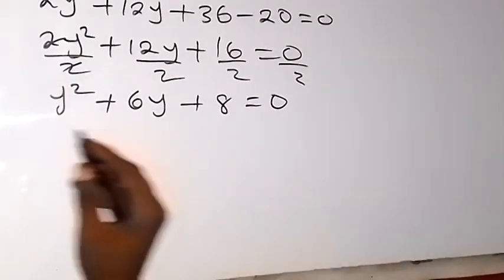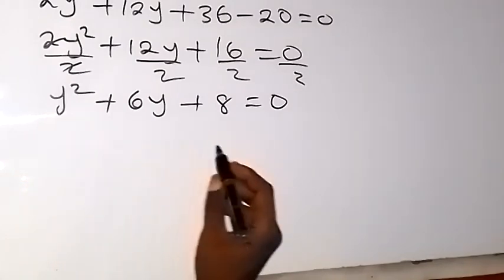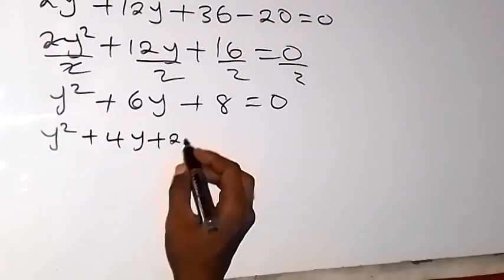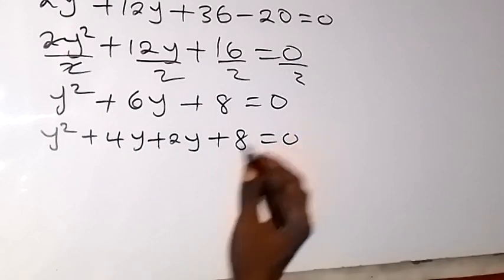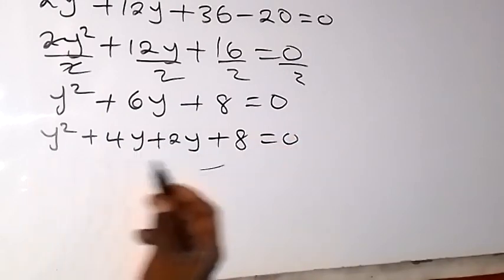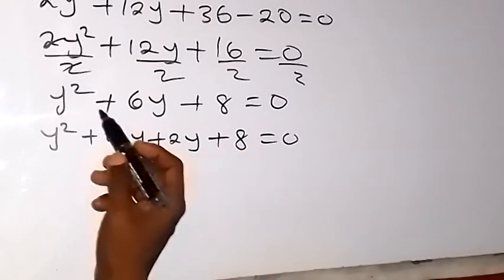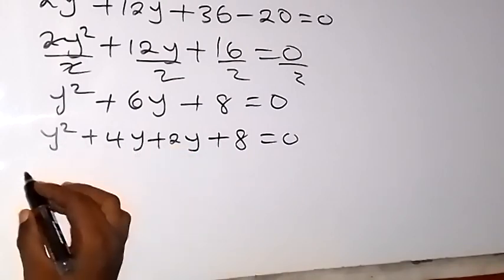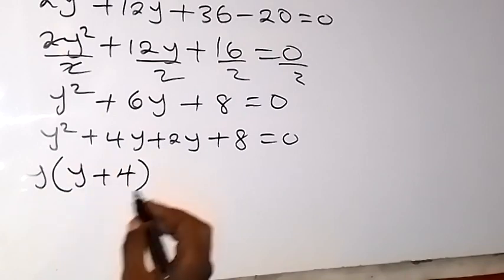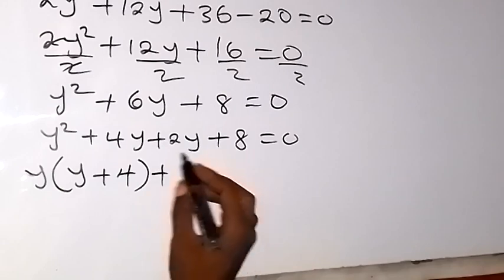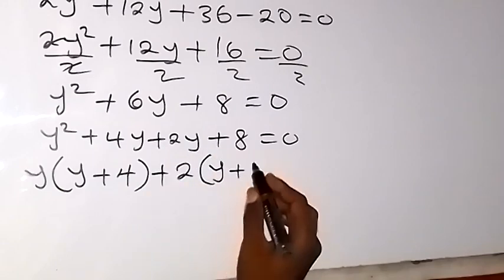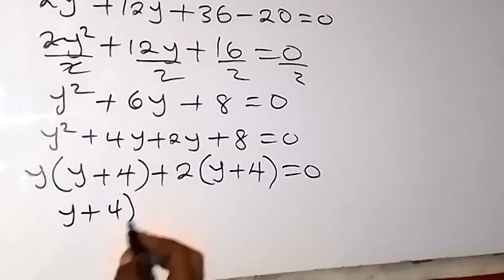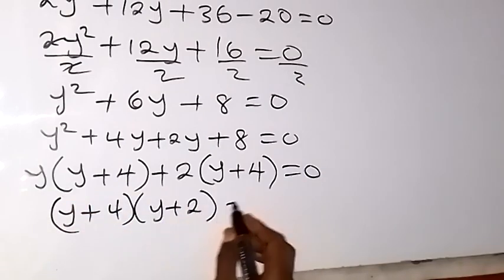We can solve this by factorizing. When we factorize, we have y squared plus 4y plus 2y plus 8 equals 0, because 4y times 2y gives 8y squared, and adding them gives 6y. Grouping in pairs: y is common in the first two terms, giving y(y plus 4). Then 2 is common in the last two, giving 2(y plus 4). So y plus 4 is common overall.